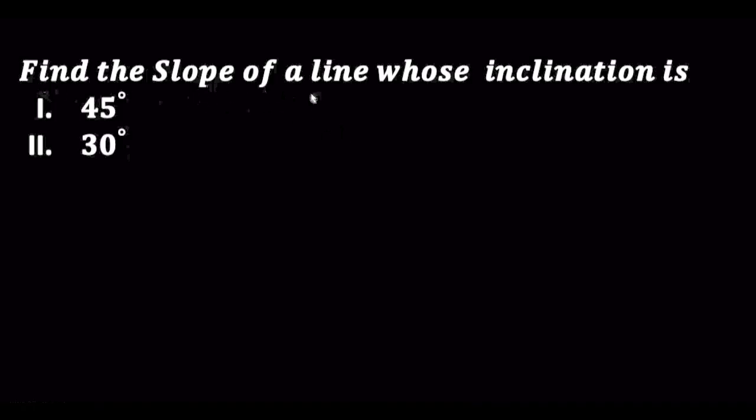Now let's see how to find slope. The question is: find the slope of a line whose inclination is 45 degrees. You know slope m is equal to tan theta. So it equals tan 45 degrees, and tan 45 degrees is 1.